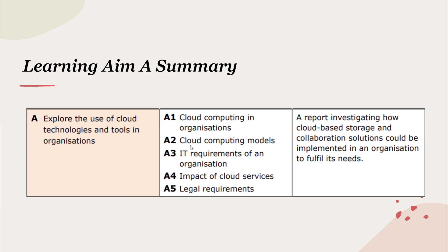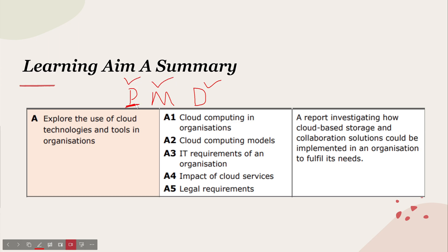These are all the points we'll need to cover to achieve distinction level. Just like every BTEC Level 3 IT unit, we have Pass, Merit, and Distinction. I'm going to be tailoring everything to distinction — I'll cover the Pass and Merit content along the way. If you're aiming for a Pass, only do the P criteria; for Merit, do P and M. I think everyone should aim for distinction because this is a relatively straightforward unit.